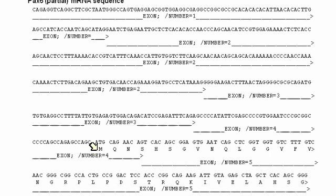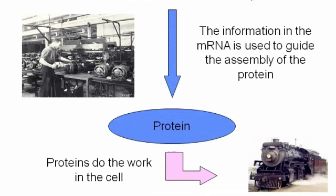The conversion of the message to protein is called translation. So the information in the messenger RNA is used to guide the assembly of the protein, shown here as a blue circle, and it is the proteins that do all of the work in the cell. So it's not enough to have a gene expressed. The gene also must be converted into protein in order to have an effect.